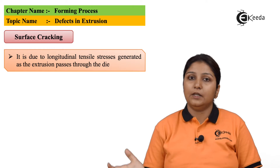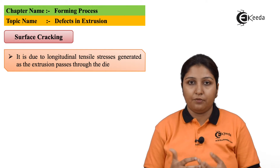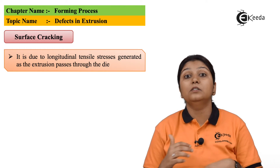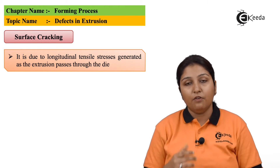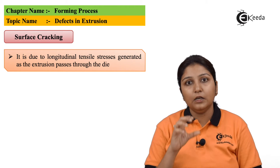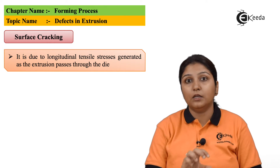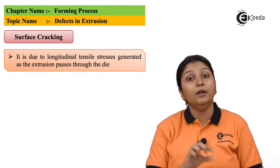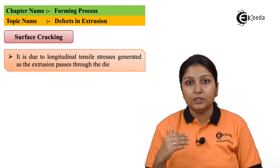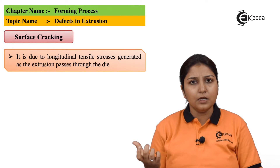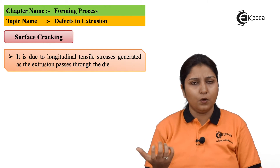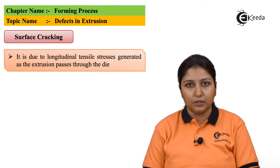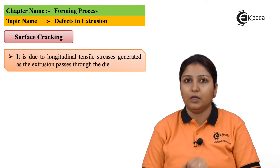Surface cracking is a very simple defect. It generally occurs on the surface when your material is passing longitudinally through the die — the surface gets thin micro-cracks. So surface cracking takes place on solidification.